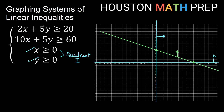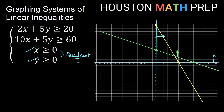For 10x plus 5y greater than or equal to 60, finding the x-intercept: zero out y, giving 10x equal to 60. Dividing by 10 gives x equal to 6. For the y-intercept: zero out x, giving 5y equal to 60. Dividing by 5 gives y equal to 12. Graphing that line, I have a positive y coefficient, so greater than means above — I also want to be above this yellow line.